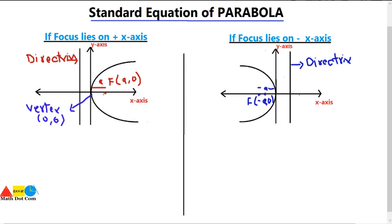Let's derive the standard equation of parabola in the case the focus lies on the x-axis and the vertex is (0, 0) at the origin. We can derive the equation of parabola using the definition of the parabola: any point P on the parabola is at equal distance from point F and from the directrix. The directrix is the line that is outside the parabola, so distance PF equals distance PM.